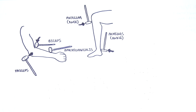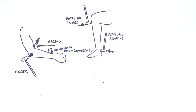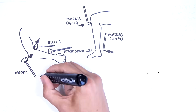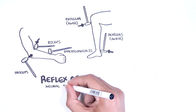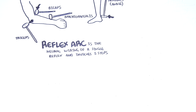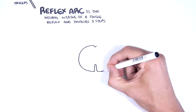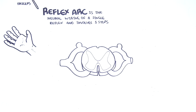A reflex involves sensory nerve fibers delivering information to the central nervous system, and motor fibers carrying commands to the effectors via the peripheral nervous system. The reflex arc is the neural wiring of a single reflex and involves five steps. The spinal cord corresponds with the central nervous system. The reflex arc includes a receptor reacting to a stimulus, such as this nail.